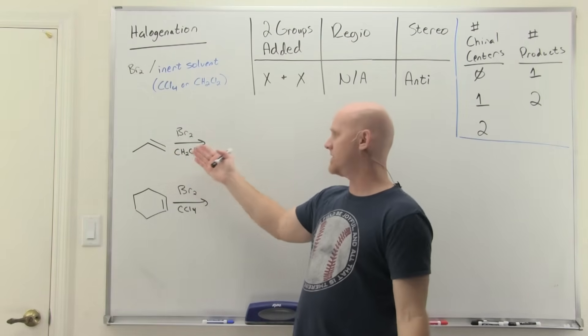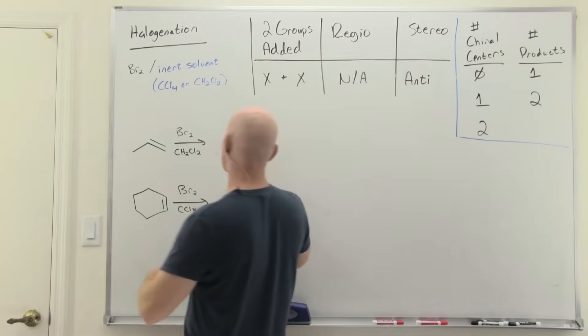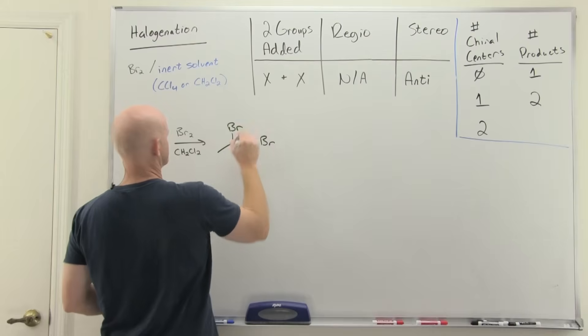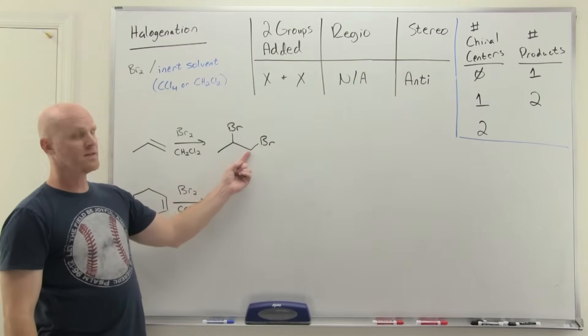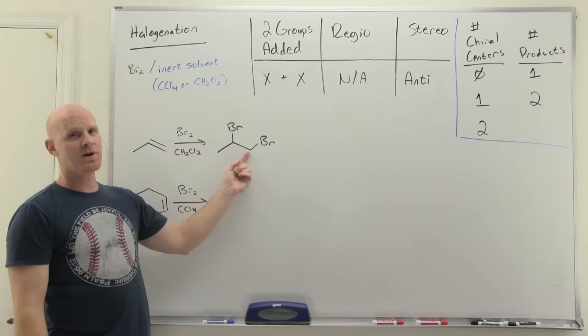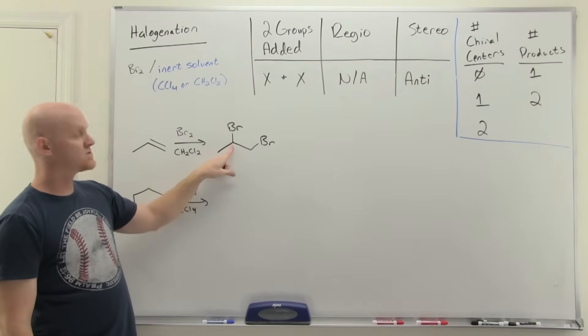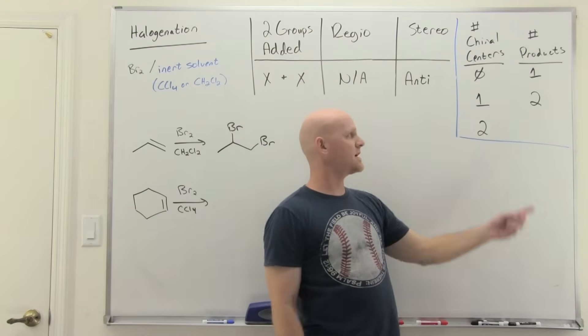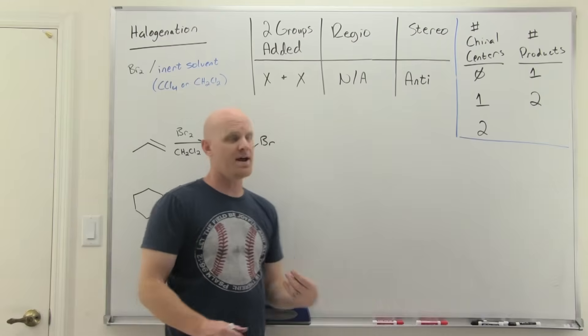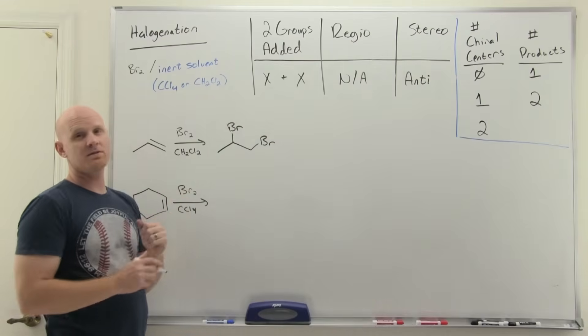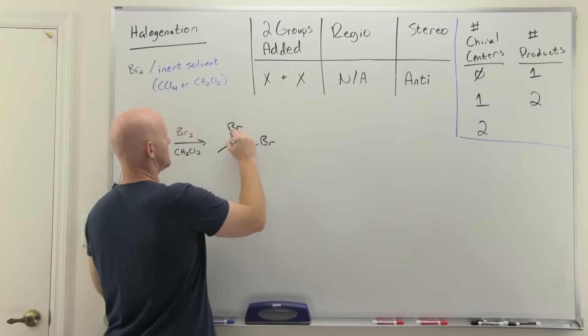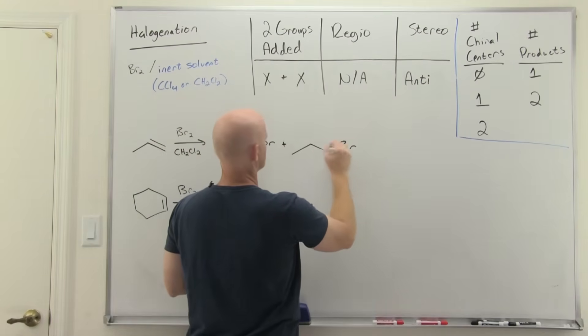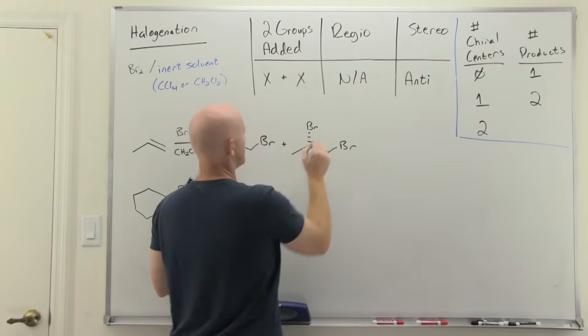We'll use our standard alkene here, and if we had Br2 and CH2Cl2, we would add a bromine to both sides. Where I added the bromine on the less-substituted carbon, that did not turn into a chiral center. It's got two hydrogens. But this one did. If you form one chiral center, no matter which alkene reaction you're talking about, you will always form both versions, R and S. So this would not be a sufficient answer here. You'd have to draw both enantiomers.